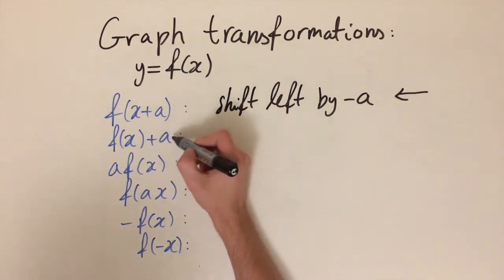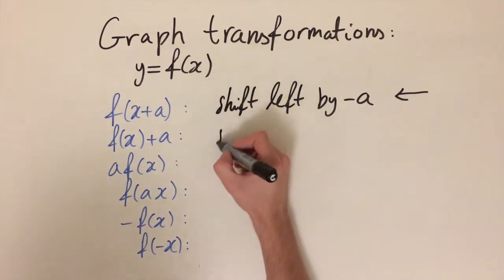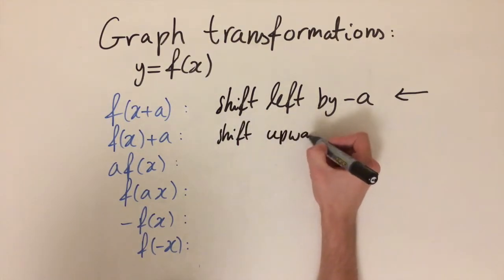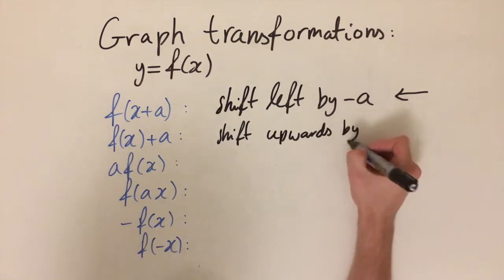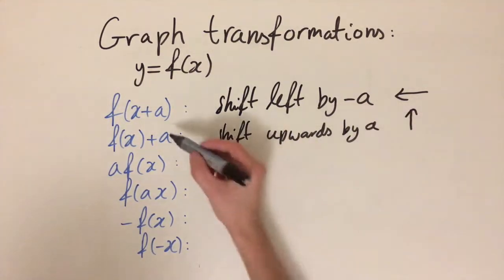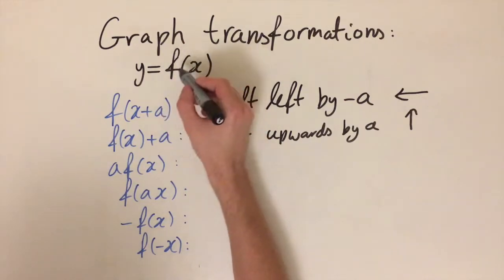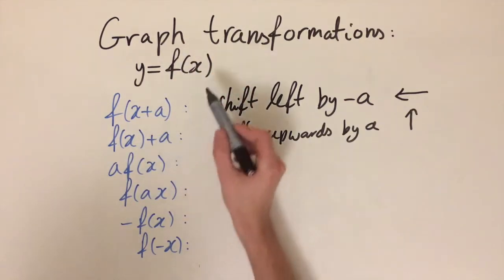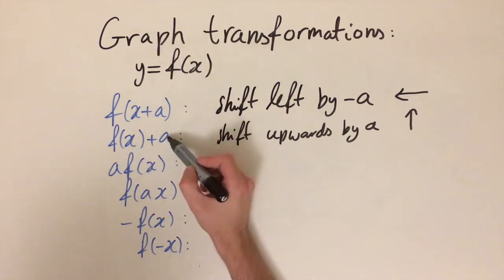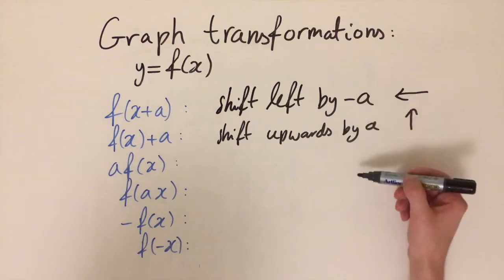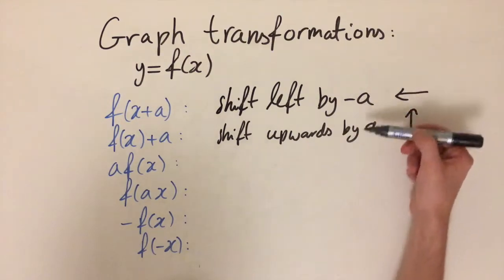Now if instead we have f(x)+a, so a is outside the brackets, then we have a shift upwards by a. This makes sense because we can think of the original function as being f(x), and then we're just adding on constant a. So whatever we feed in x, we're just going to add on a afterwards, which corresponds to moving the whole curve upwards by a.